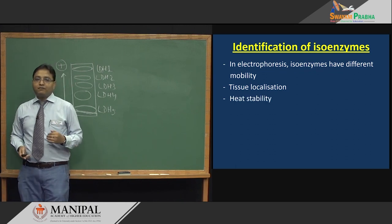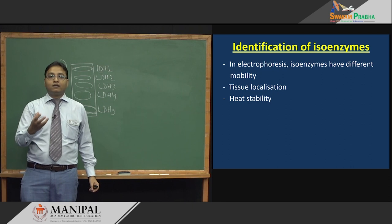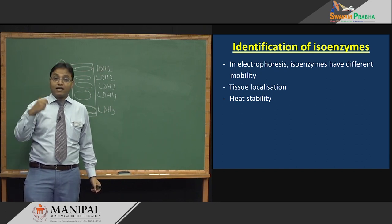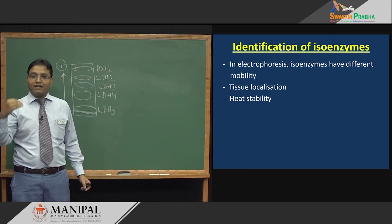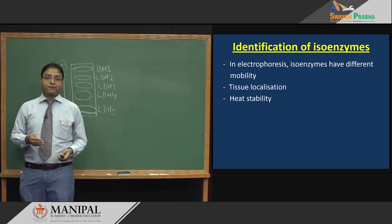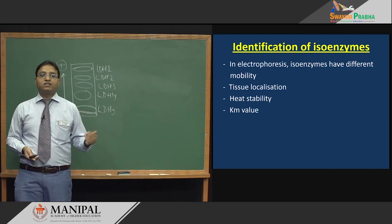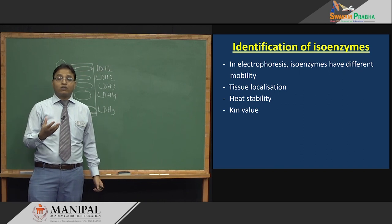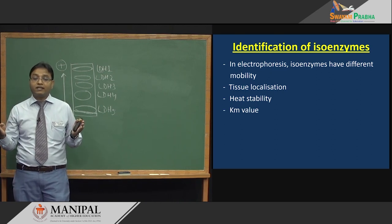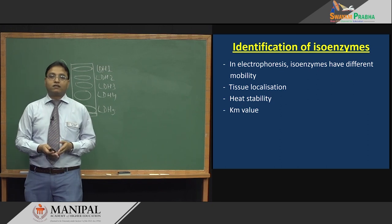For heat stability identification — one isoenzyme of LDH will be very stable at 60°C whereas another isoenzyme of LDH will not be stable at the same temperature. Different isoenzymes are stable or unstable and may denature at the same temperature. Regarding Km values, different isoenzymes have different Km values. For example, hexokinase — which converts glucose to glucose-6-phosphate — has 4 isoenzymes, and hexokinase 4 has the maximum Km value compared to hexokinase 1, 2, and 3.